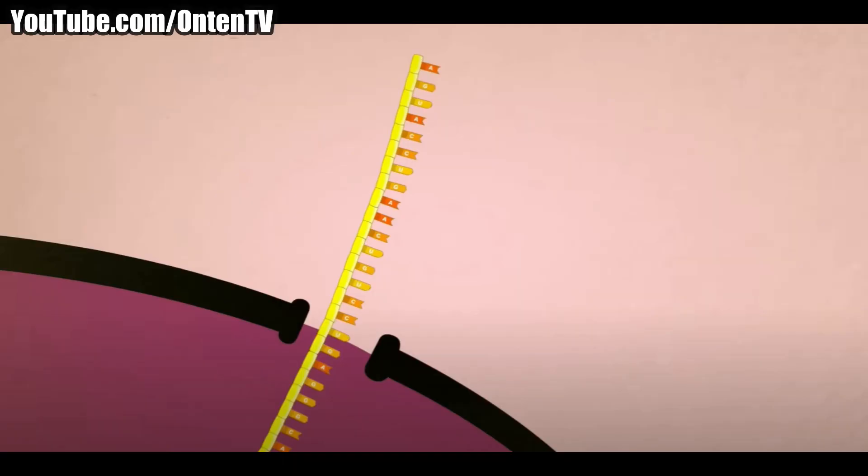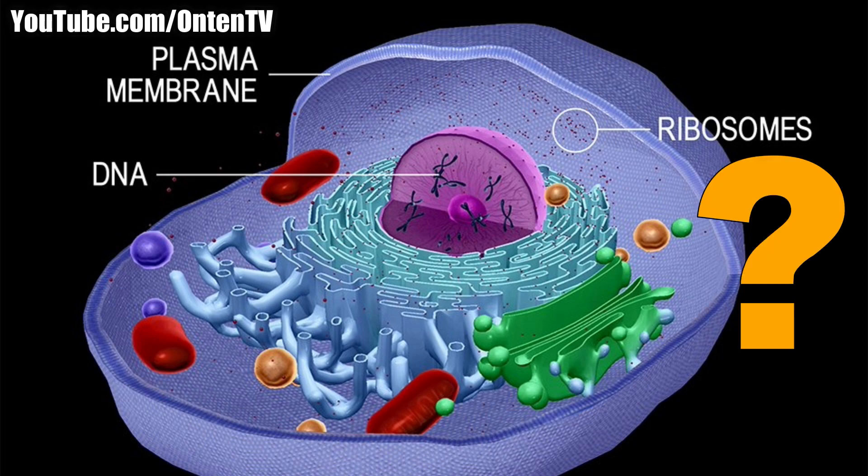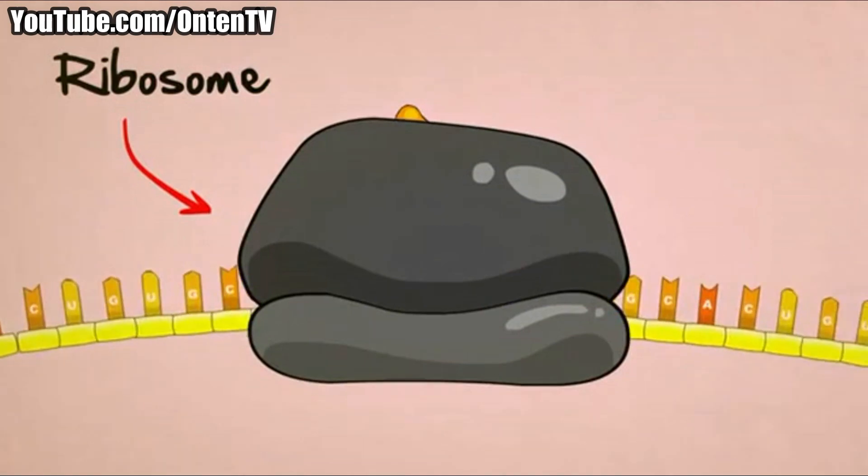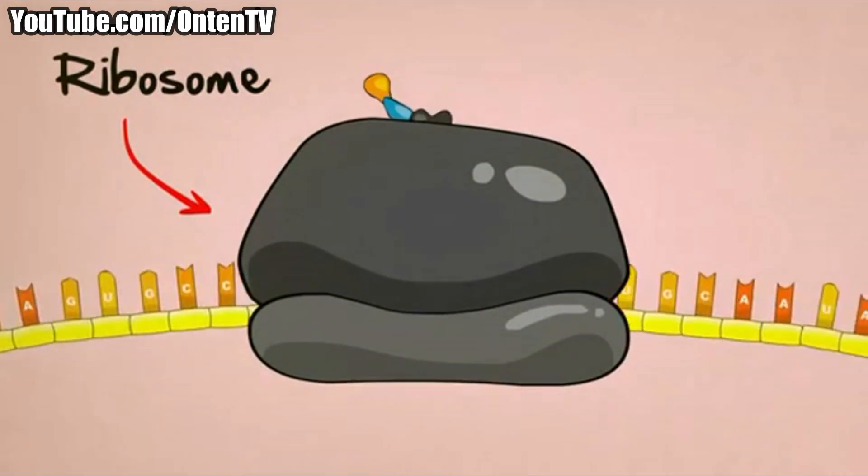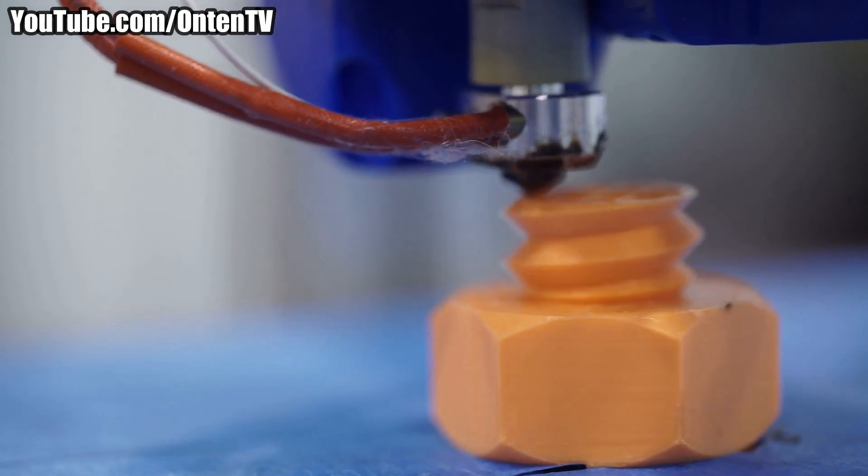So what is the ribosome? Ribosome is like a protein machine. This part of the cell is really interesting—it's kind of like a 3D printer.